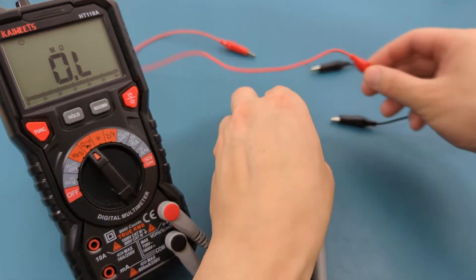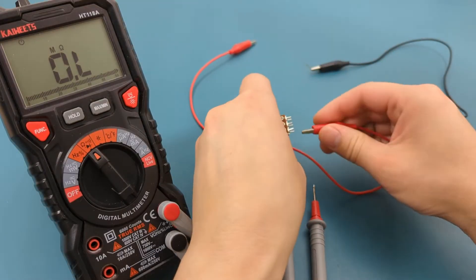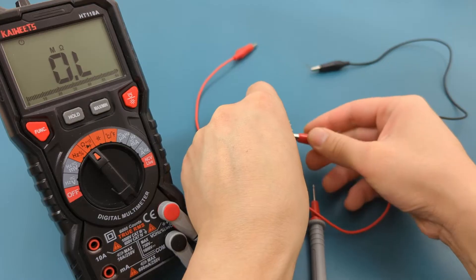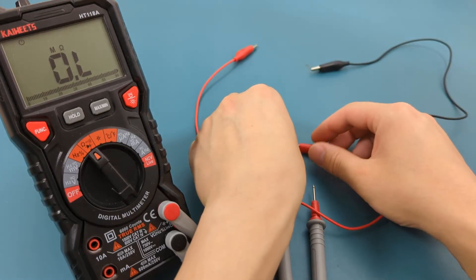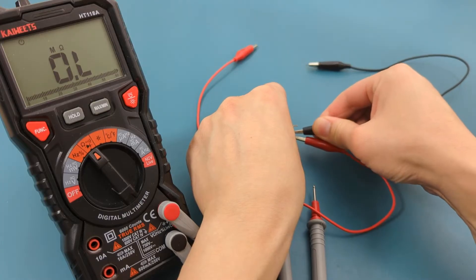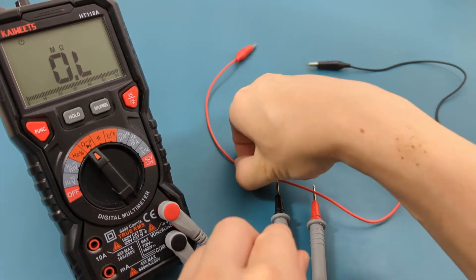Connect one of the alligator clips to the left terminal. Connect the other alligator clip to the middle terminal. Connect the other ends of the alligator clips to the probe leads.